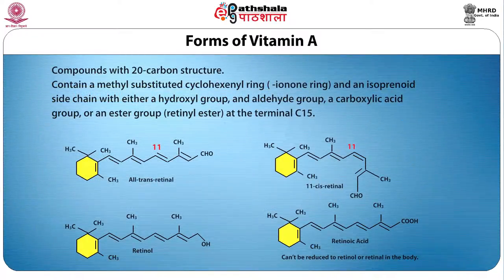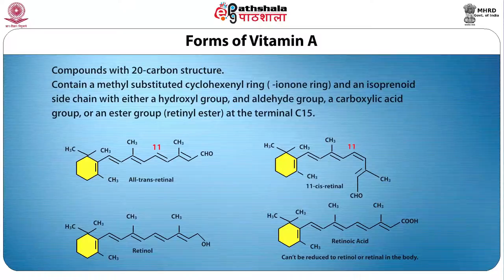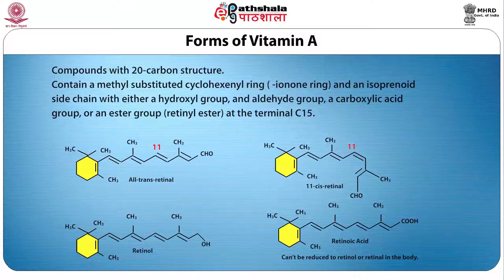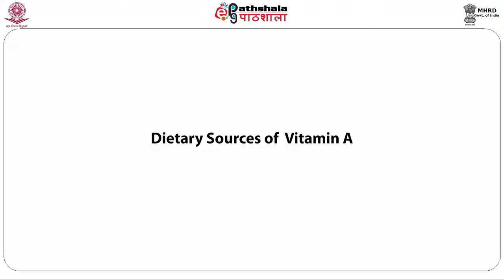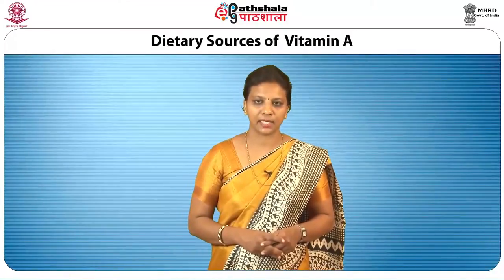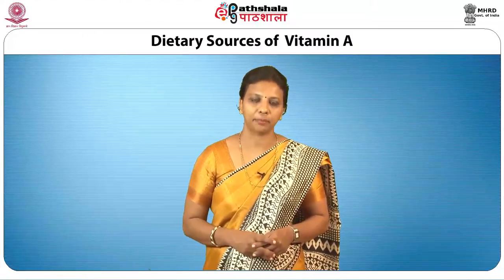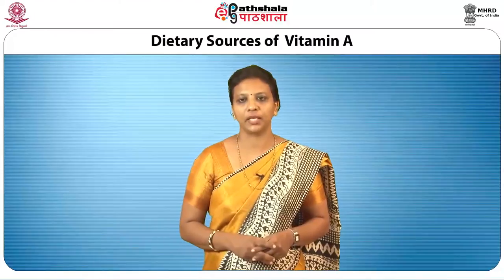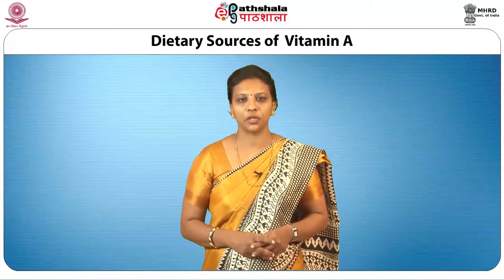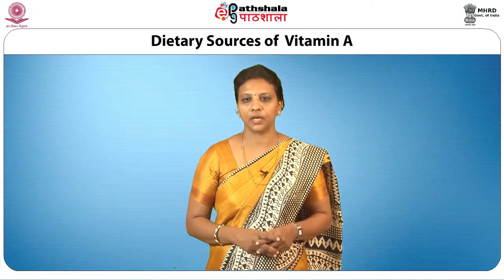Now let us briefly review the chemistry of vitamin A. Retinol in its pure form is a pale yellow crystalline solid and exists in nature as various isomers. The metabolites of retinol contain five conjugated double bonds within their six-carbon ring structure and so form specific side chains. The double bond in retinol plays a unique role in the multiple vision process. It is relatively stable to heat, acids and alkalies, but is easily oxidized at high temperature in the presence of air and rapidly destroyed by UV rays or in rancid fats. Retinoids are insoluble in water but soluble in organic solvents and fat.